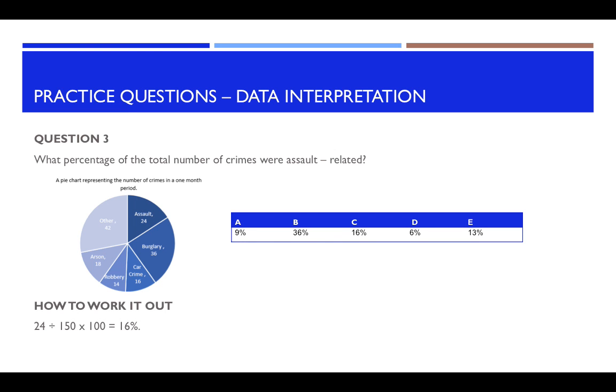So how to work it out. You would do 24 divided by the total of this. So if you add up all of these you would get 150. So 24 divided by 150 times by 100 would give you 16. So 16% of the total number of crimes were assault related. So your answer to this question is C.